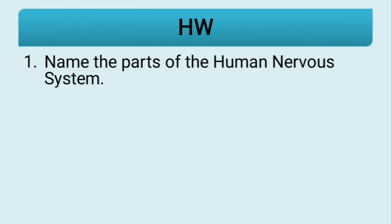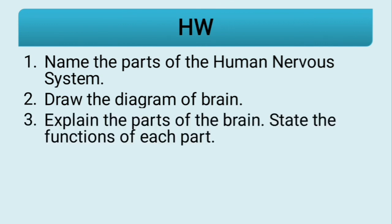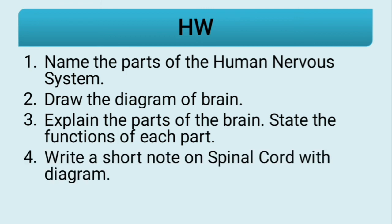That was all for today. I hope you enjoyed this new topic. We will be continuing with the lesson in the next session. The homework for you is: name the different parts of the human nervous system; draw the diagram of the brain; explain the parts of the brain and state the function of each part — cerebrum, cerebellum; and write a short note on the spinal cord with a diagram.